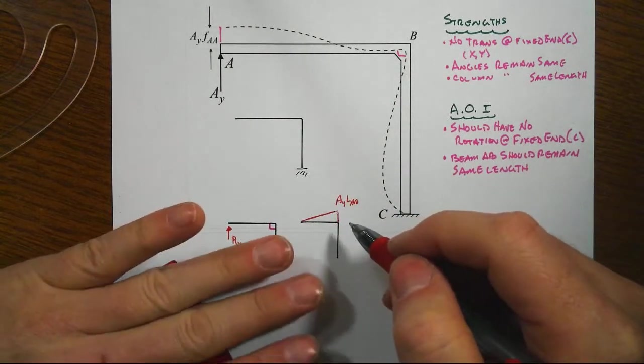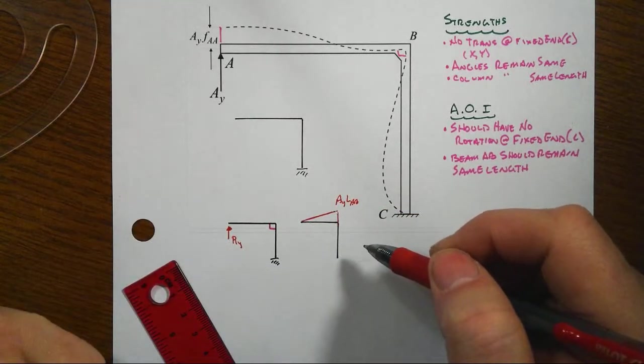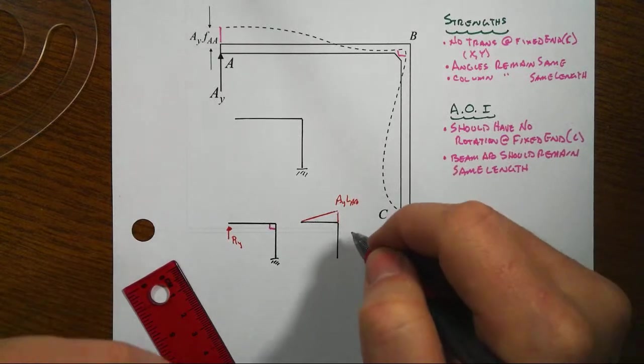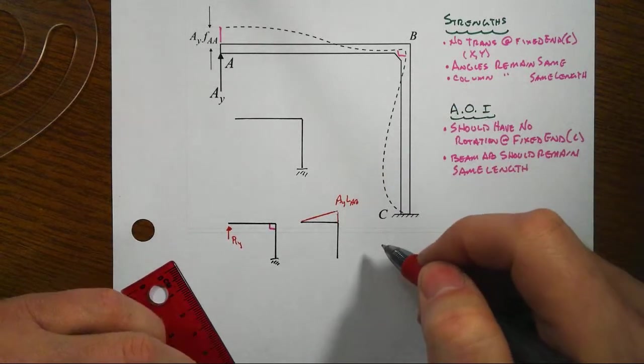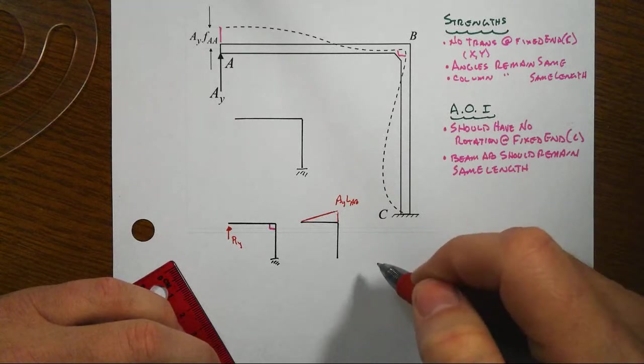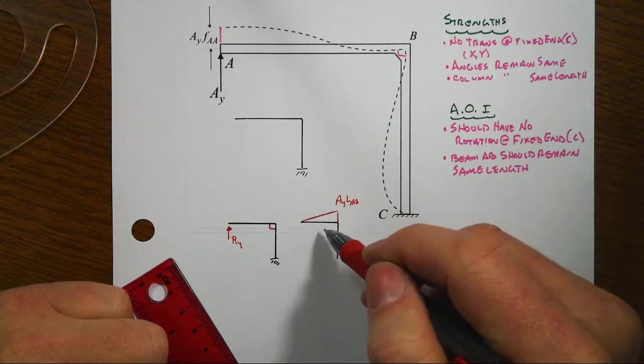Now, if that was it, if the fixed end was at B, we'd be done, but that's not the end of it. Instead, we have then this flexible support that is the column BC, and then the rigid support down here. So the column BC serves as the support for the beam AB.